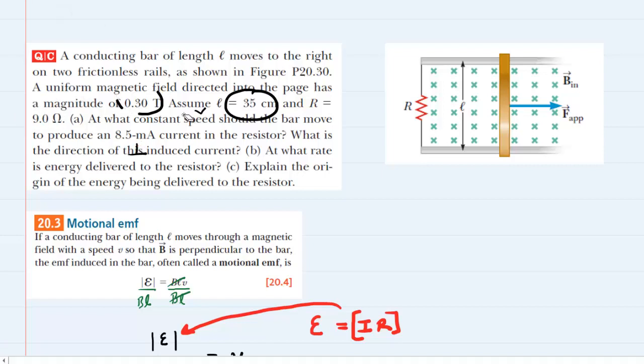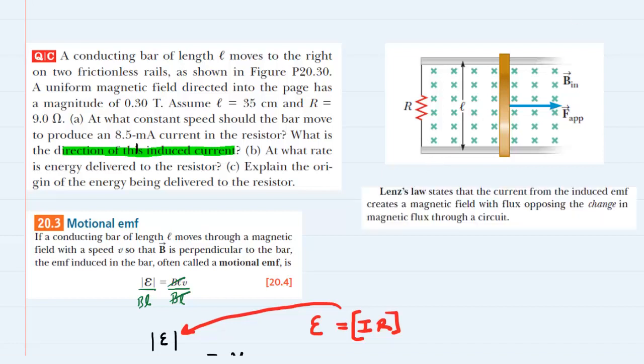If we clean up our workspace here, we know that we also have to predict the direction of the induced current. So we're going to have to rely on a new law here known as Lenz's Law. Let's take a look at that. Let's consider this change in magnetic flux first.